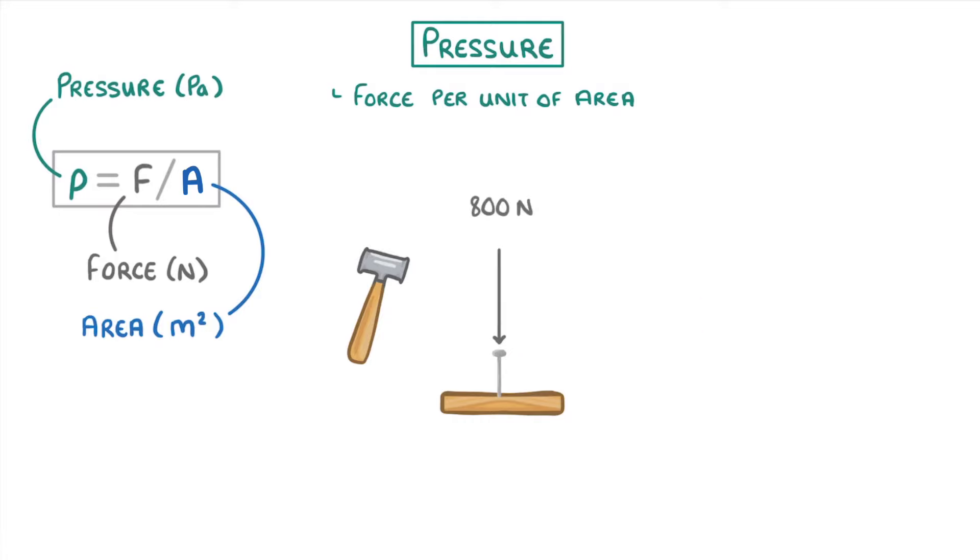then you would generate a pressure of 8 million pascals or 8,000 kilopascals. In this case, the pressure was created from the collision of two solid objects: the hammer and the nail.